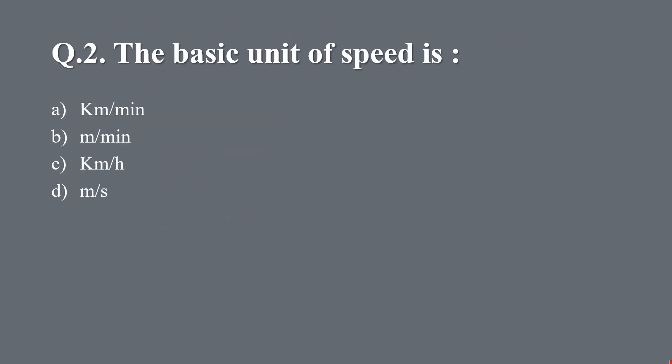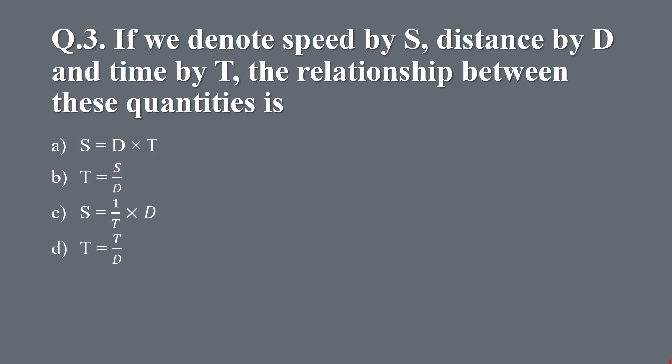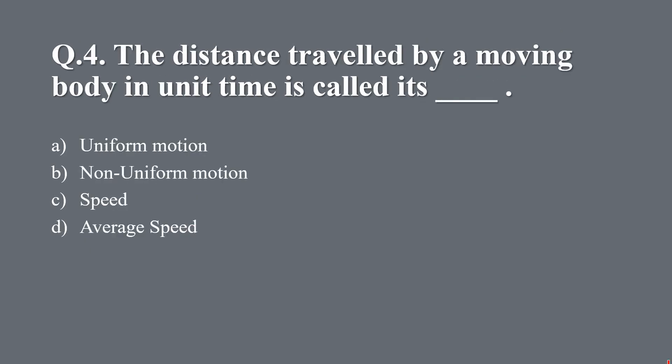Question 2: The basic unit of speed is — a) Kilometer per minute, b) Meter per minute, c) Kilometer per hour, d) Meter per second. The right answer is d) Meter per second. Question 3: If speed is S, distance is D, and time is T, the relationship is — the correct formula is S equals D upon T. Question 4: The distance travelled by a moving body in unit time is called its — a) Uniform motion, b) Non-uniform motion, c) Speed, d) Average speed. The right answer is c) Speed.